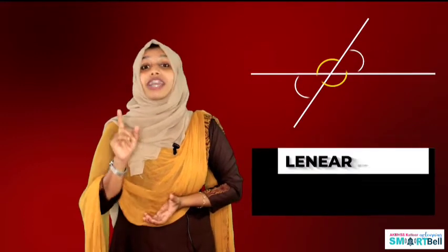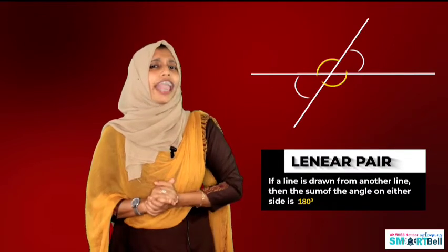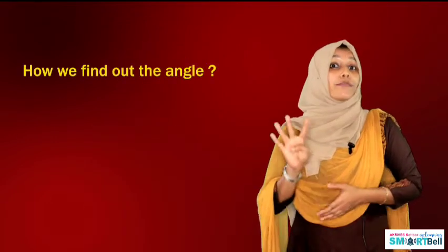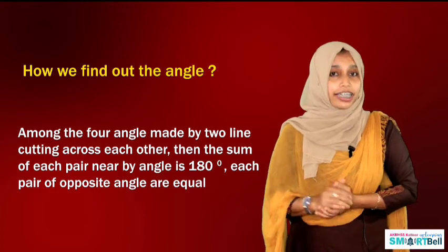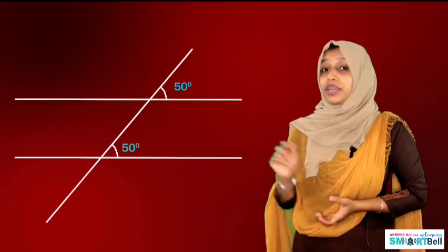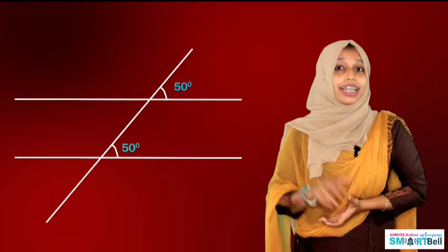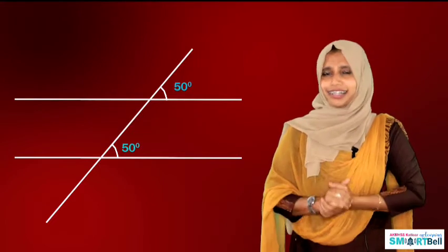I have a doubt — can you help me? What is the relation between the four angles made by two lines cutting across each other? The sum of nearby angles is 180 degrees, and opposite angles are equal. Here is an example: we have given two angles, and we know that the sum of nearby angles is 180 degrees and opposite angles are equal.